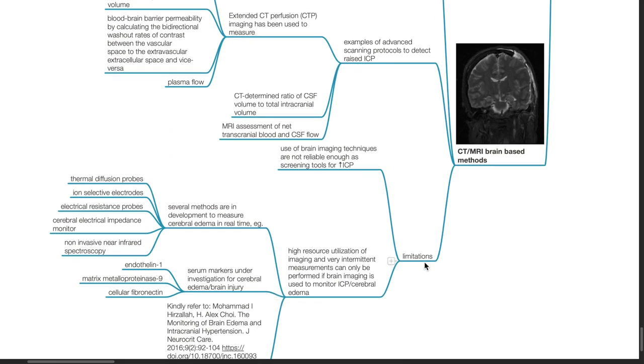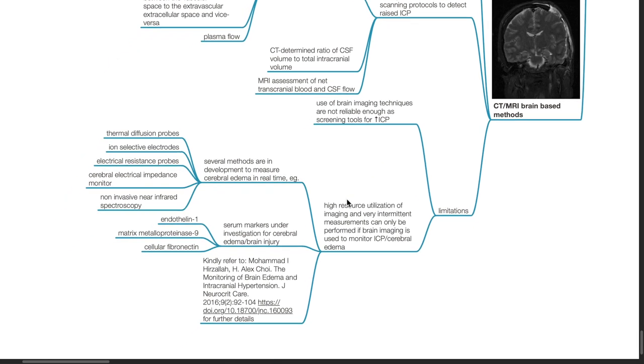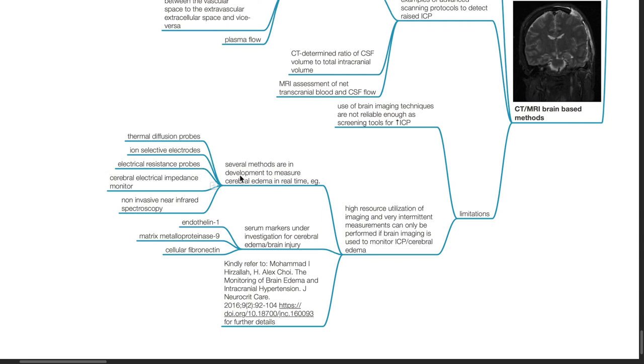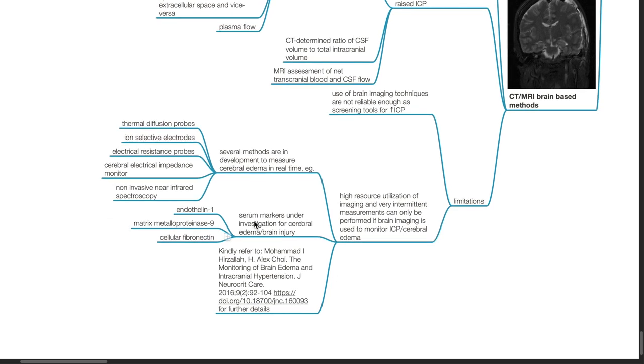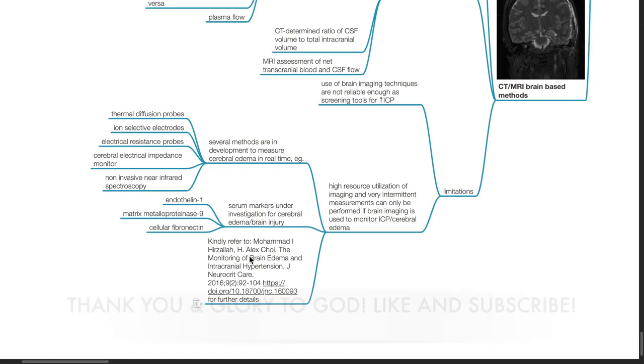Limitations: use of brain imaging techniques are not reliable enough as screening tools for raised ICP. High resource utilization of imaging and very intermittent measurements. Can only be performed if brain imaging is used to monitor ICP or cerebral edema. Several methods are in development to measure cerebral edema in real time, such as thermal diffusion probes, ion selective electrodes, electrical resistance probes, cerebral electrical impedance monitor, non-invasive near infrared spectroscopy. Serum markers under investigation for cerebral edema or brain injury include endothelin-1, matrix metalloproteinase-9, and cellular fibronectin. Kindly refer to the research done by Muhammad I. Harizzola in 2016 for further details.